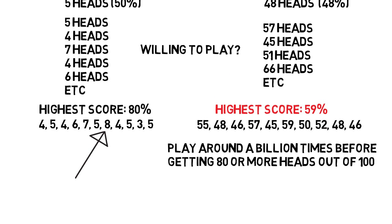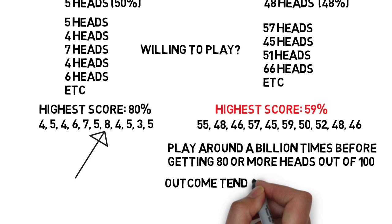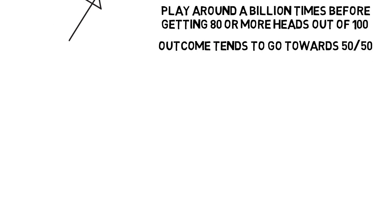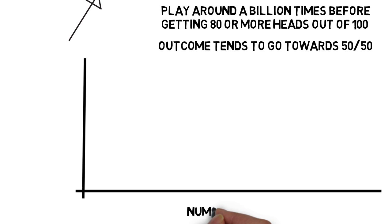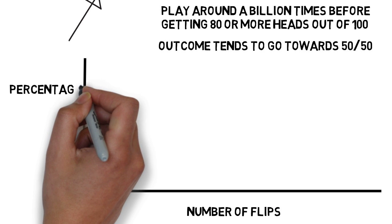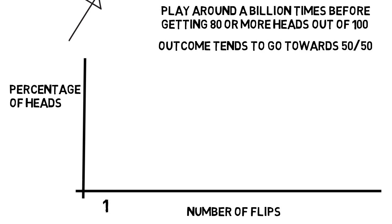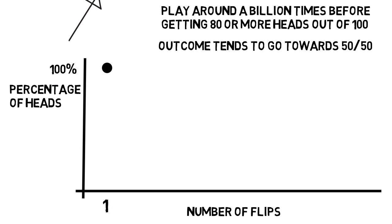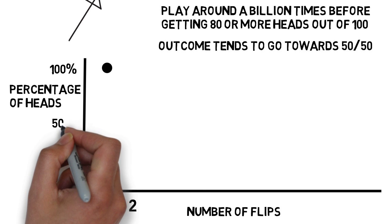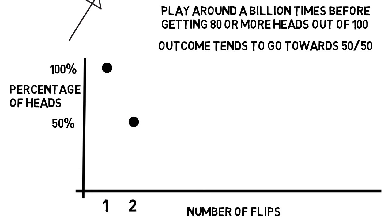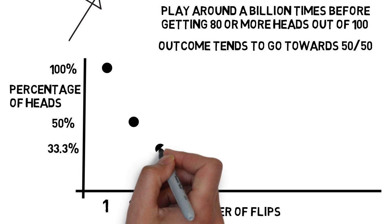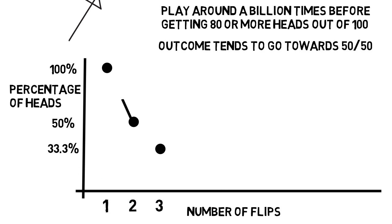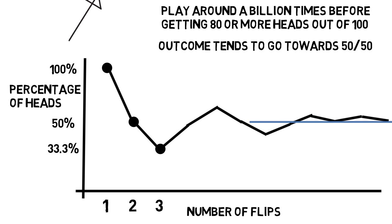Why does this happen? As you flip the coin more and more, the outcome tends to go toward the expected value of 50-50. If you record the amount of flips versus the percentage of heads, you'd see something very interesting. After one flip — let's say heads — you've gotten heads 100% of the time. Then the second flip comes up tails, so now 50% of your flips have been heads. Then if the next is tails, only 33% of your flips have been heads. If you keep flipping, the curve approaches 50% more and more, as if being pulled in by something.